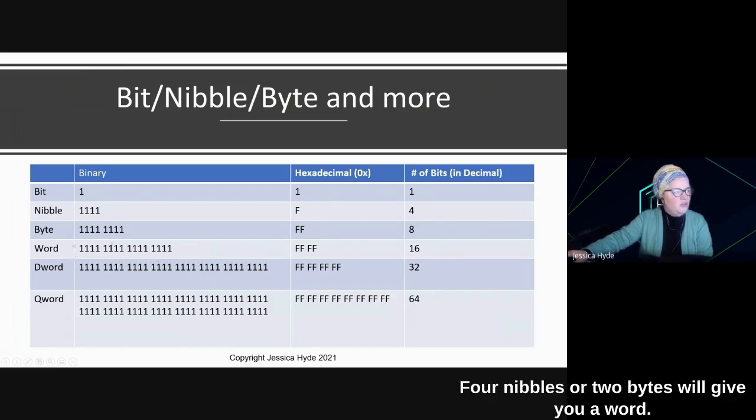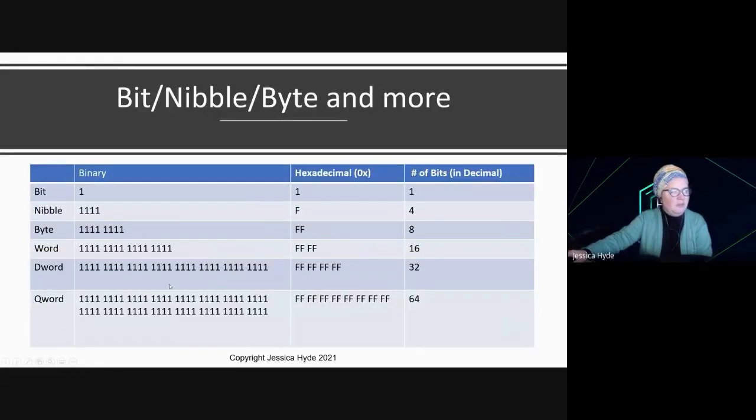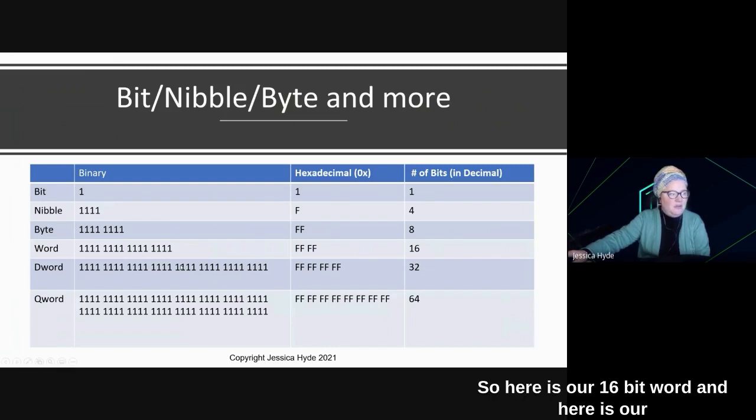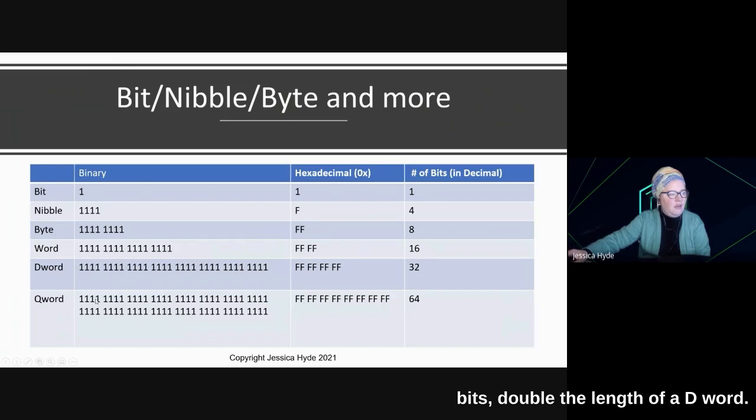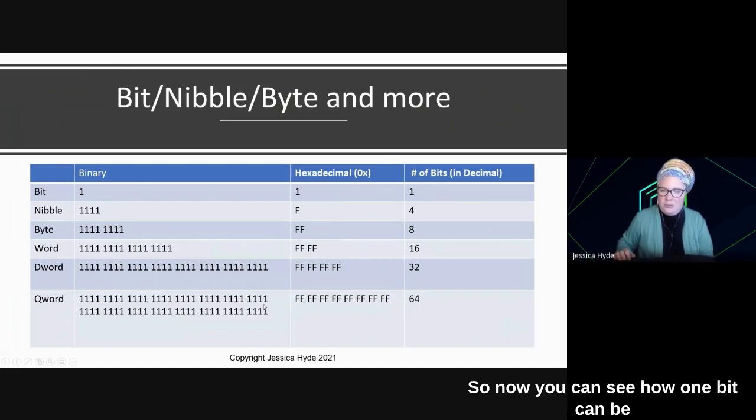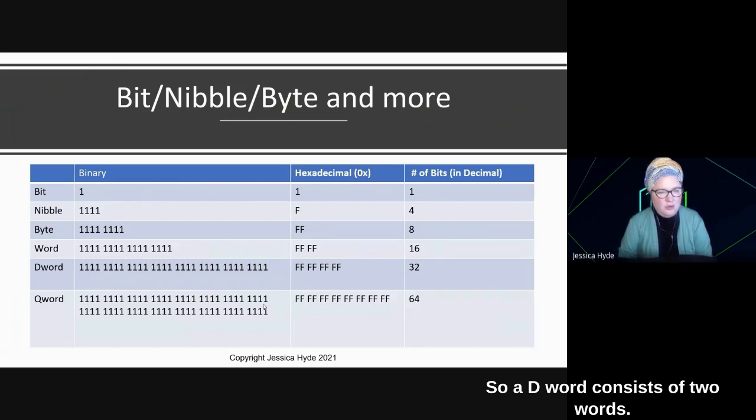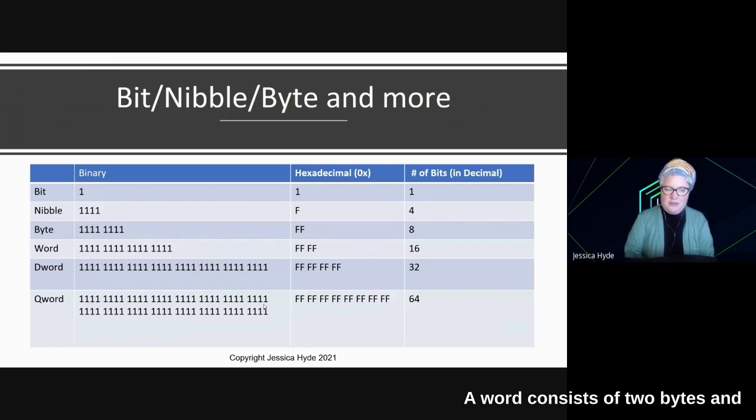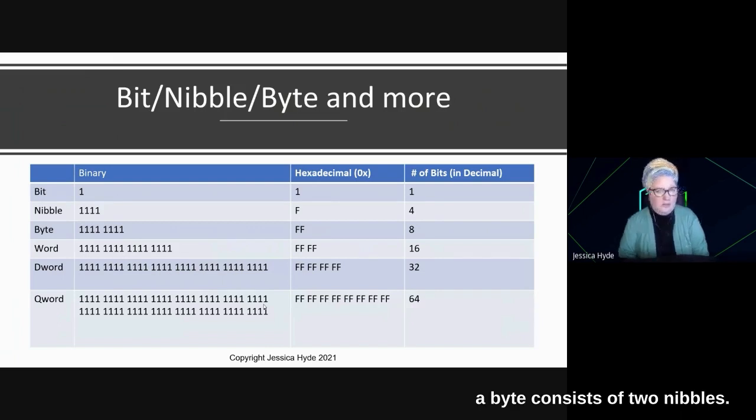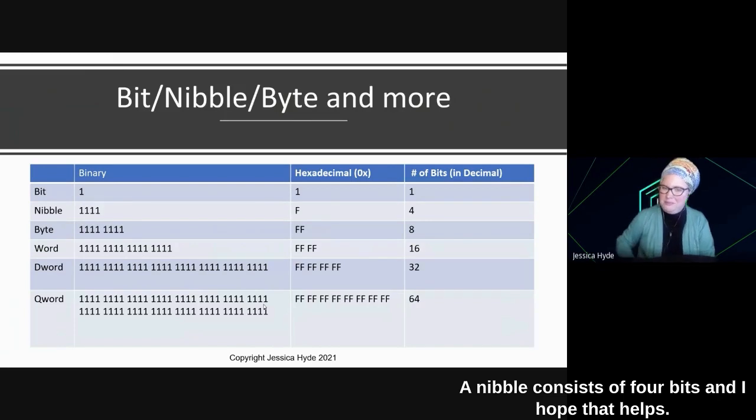When we get to a word is when we start to see a space, because hexadecimal digits in most of your software will be organized by byte. So here is a word, followed by one nibble, followed by a second nibble, a third nibble, and a fourth nibble. Four nibbles, or two bytes, will give you a word. A d-word, or double word, is going to be 32 bits in length, double what your word was. So here is our 16-bit word, and here is our other 16 bits to make a 32-bit d-word. And then a q-word is going to be 64 bits, double the length of a d-word. So now you can see how one bit can be added, and after each bit, what you're going to get. So a d-word consists of two words, a word consists of two bytes, and a byte consists of two nibbles, a nibble consists of four bits. And I hope that helps.